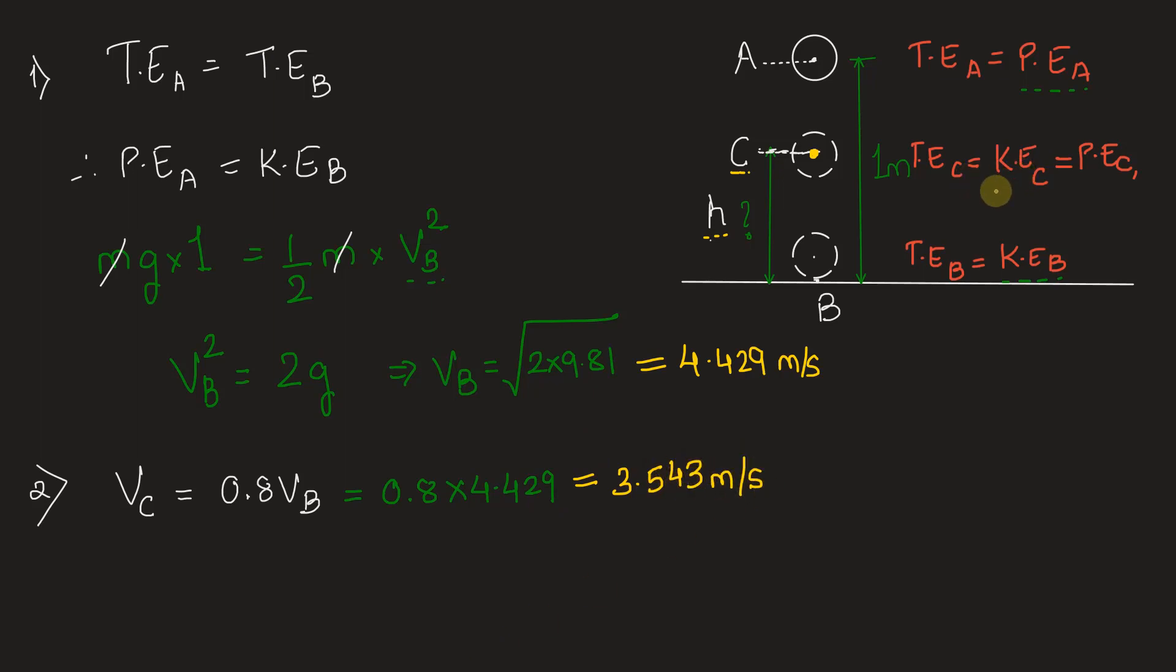Now we can use this condition to find out potential energy at C which will be in terms of the height H and then we can find out the height H. So third part we say kinetic energy at C is equal to potential energy at C. This will give us half M VC square is equal to M into G into small H.